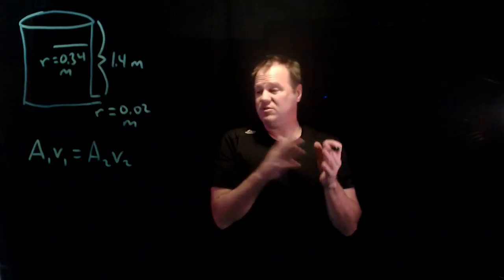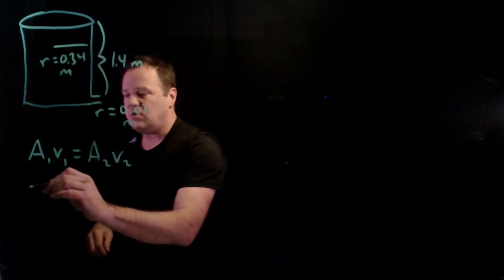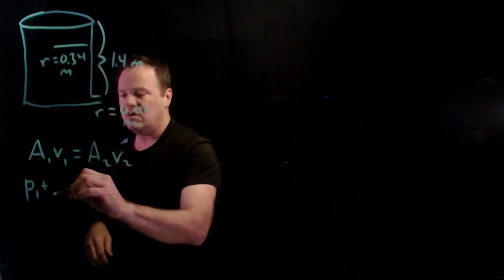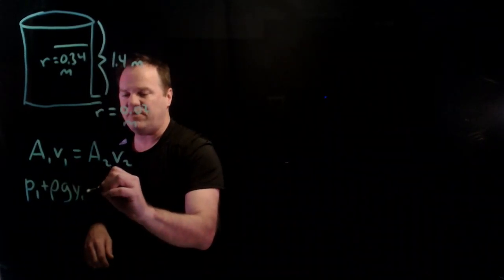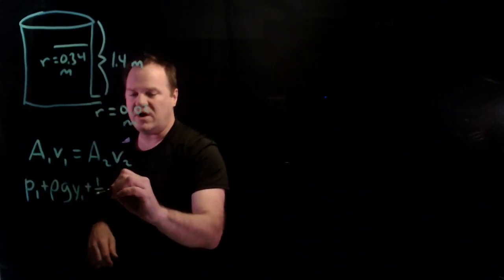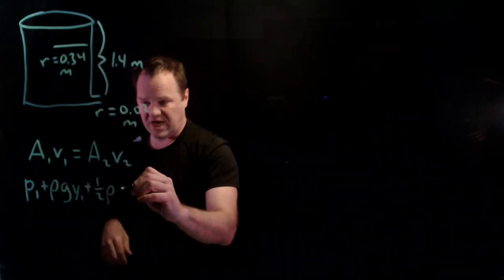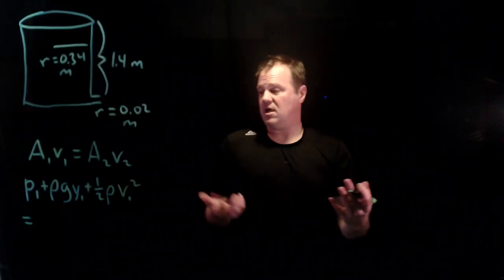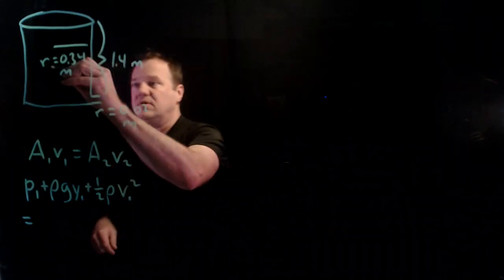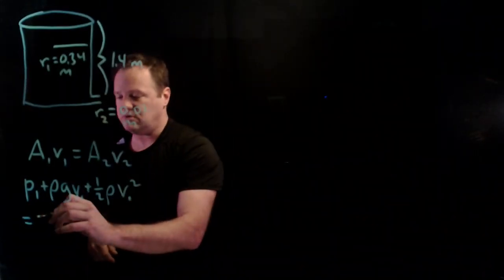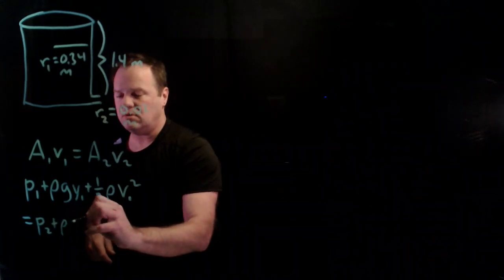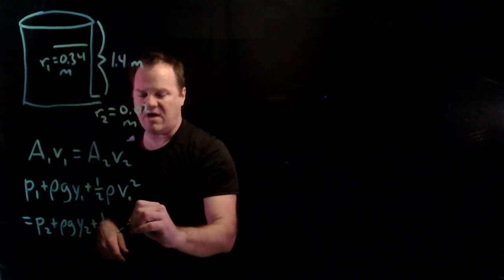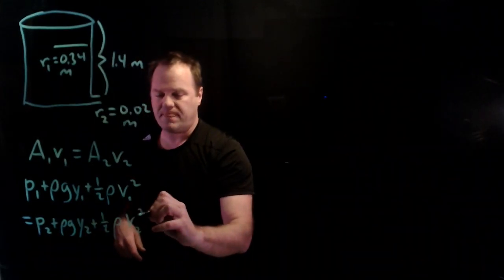Then you have Bernoulli's equation which looks a little like a bit of a mess but it's not too bad. It looks a little bit like conservation of energy. Pressure up here plus density of the fluid times g times height up there plus one-half density times speed squared equals, and then I just rewrite those things again with a subscript two. So p2 plus density of the fluid times g times the height at the second location plus one-half the density times the speed at the second location.